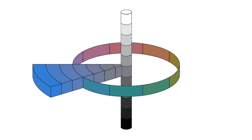This video describes how the Munsell color system is a color space that specifies colors based on three categories: hue, value, and chroma.